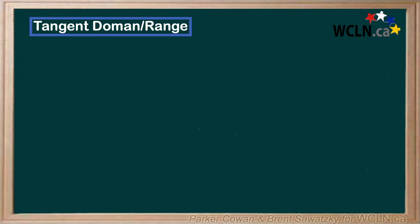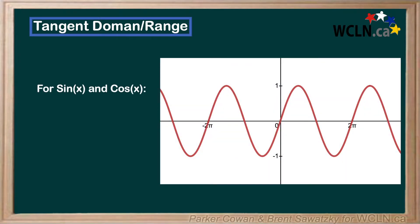Recall that for sine and cosine waves, they stretch out infinitely in the positive and negative horizontal directions. They are limited in the vertical direction by their amplitude, which for a default sine curve is just 1.